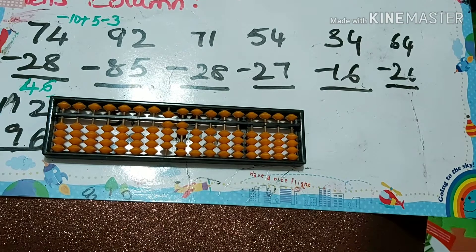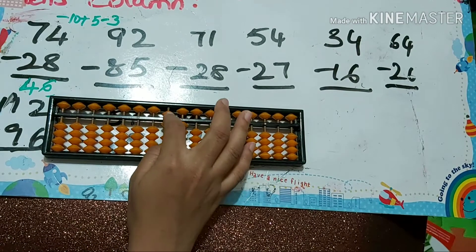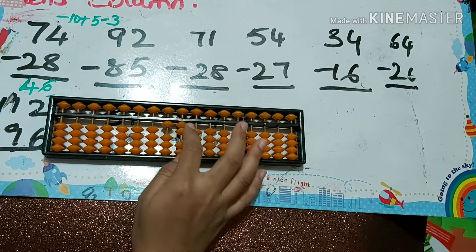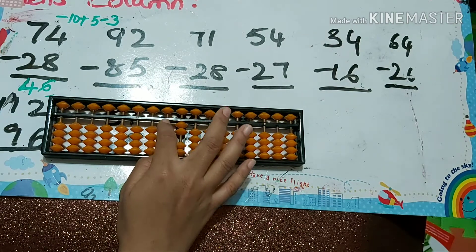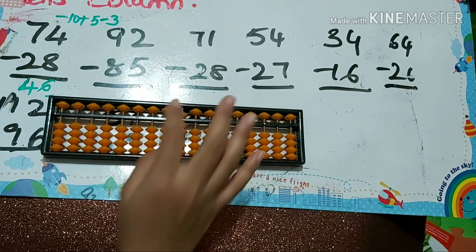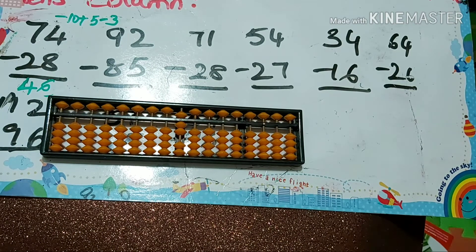92 minus 85. Minus 8 we can do directly. Next we must do minus 5. To do minus 5: minus 10 plus 5. Answer is 7.